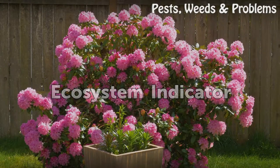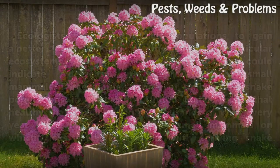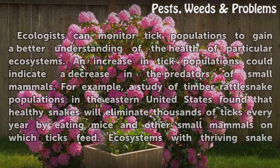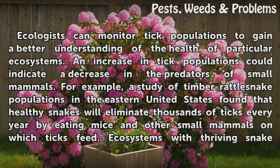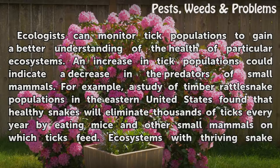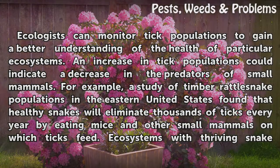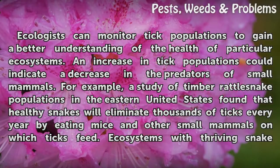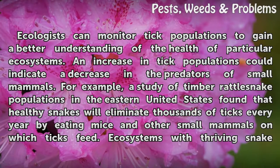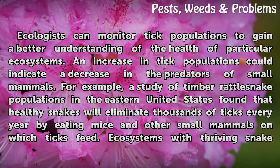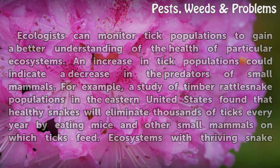Ecosystem Indicator. Ecologists can monitor tick populations to gain a better understanding of the health of particular ecosystems. An increase in tick populations could indicate a decrease in the predators of small mammals. For example, a study of timber rattlesnake populations in the eastern United States found that healthy snakes will eliminate thousands of ticks every year by eating mice and other small mammals on which ticks feed.